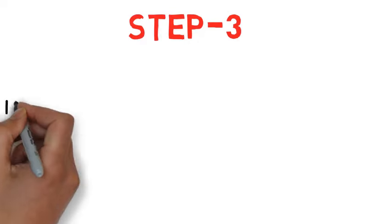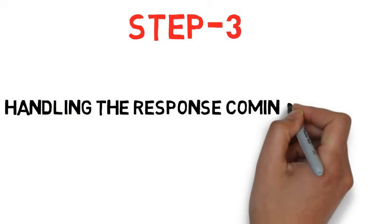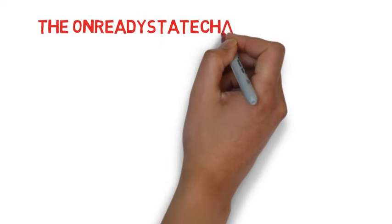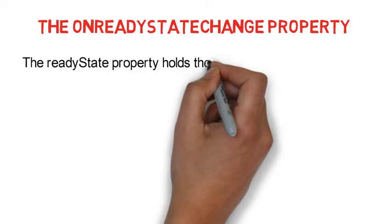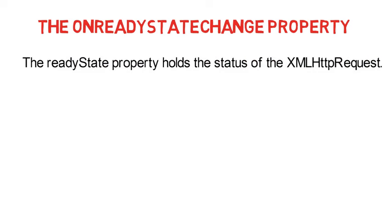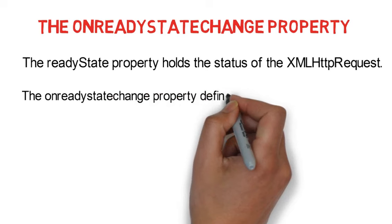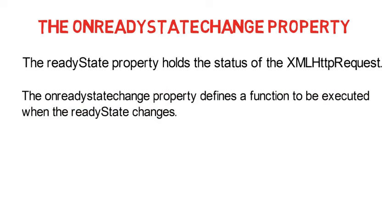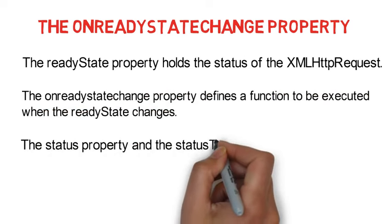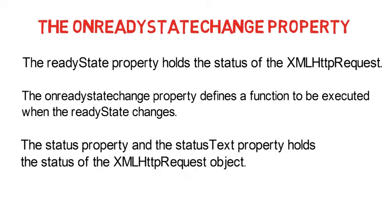Step number three: handle the response from the server. There is a property of the XMLHttpRequest object called onreadystatechange. The readyState property holds the status of the XMLHttpRequest object, and every time it changes, the onreadystatechange event triggers and a defined function is executed. The status property and statusText property also hold the status of the request.